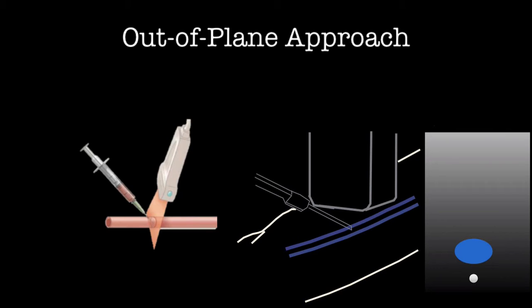What often occurs is the needle will pass through the back wall of the vein and occasionally into the artery, which may be posterior to the vein. This can lead to disastrous results.